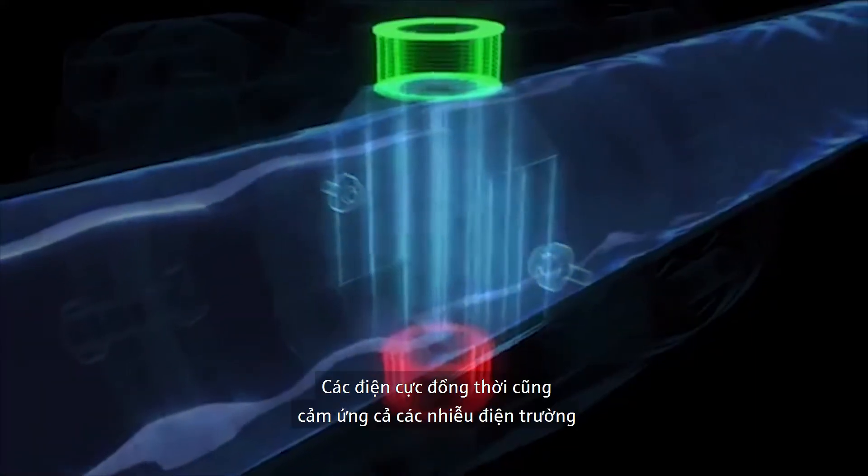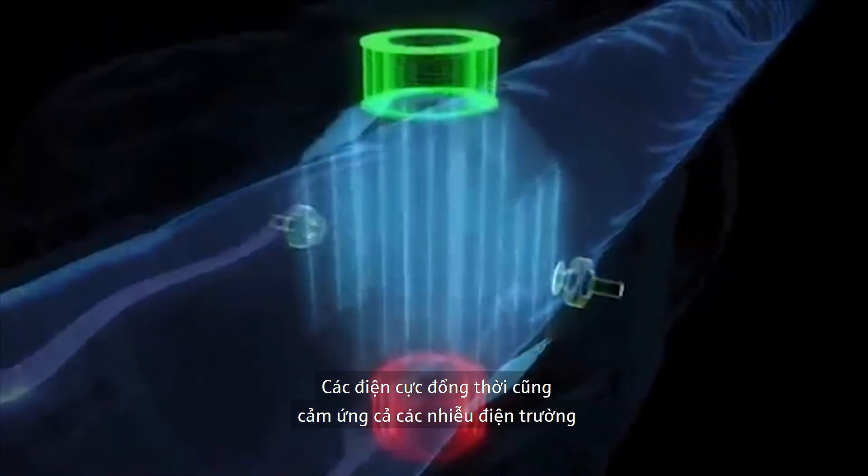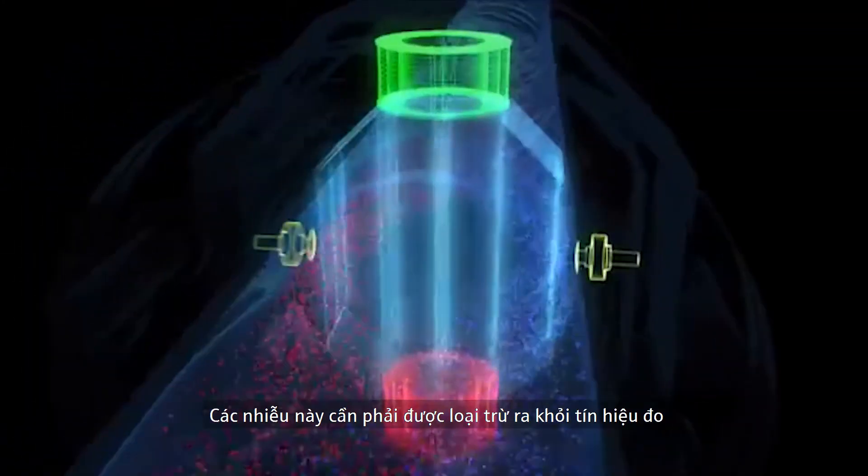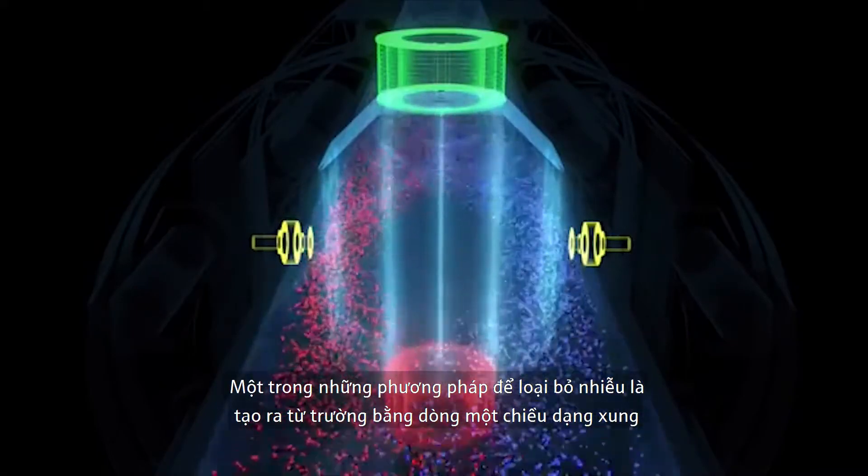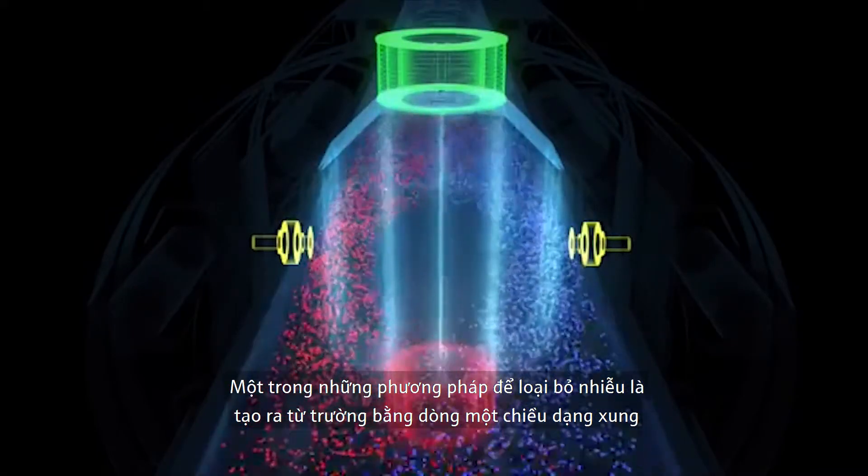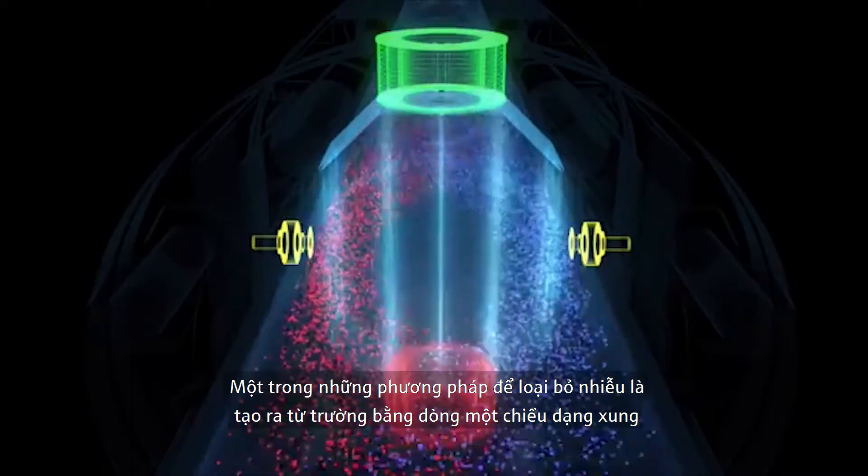The electrodes also detect what is called interference voltage, which has to be separated from the actual measuring signal. One method that has been successfully used for this purpose is to create the magnetic field with a pulsed direct current.